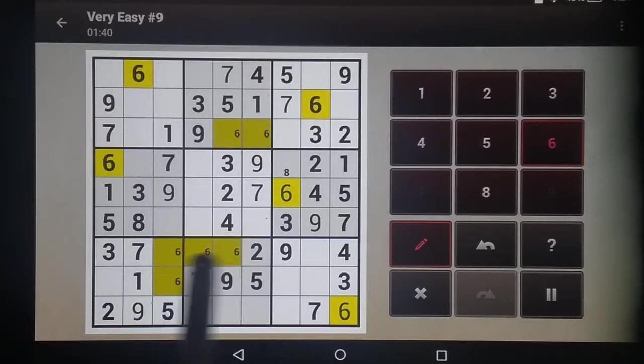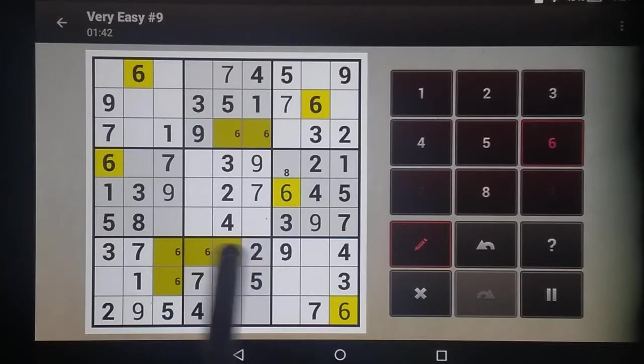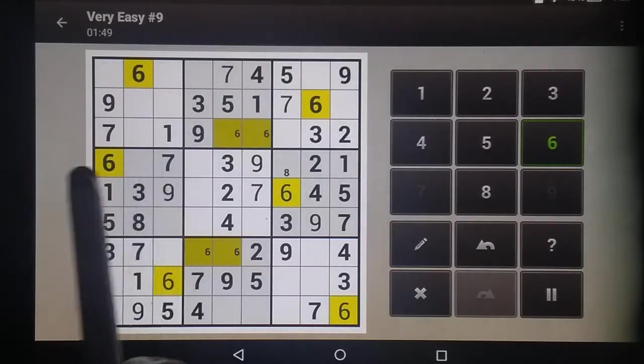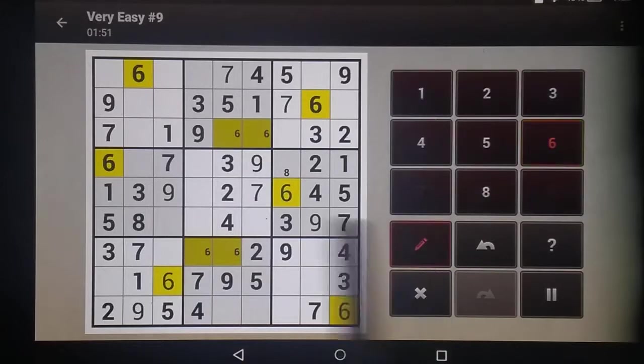Meaning this 6 has to be in this top row. Because it has to be in the top row, that means that can't happen, which means that is our 6 right there. Then this covers that row, this covers that row, and so that's what's available.